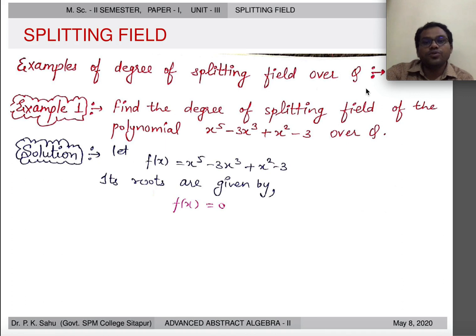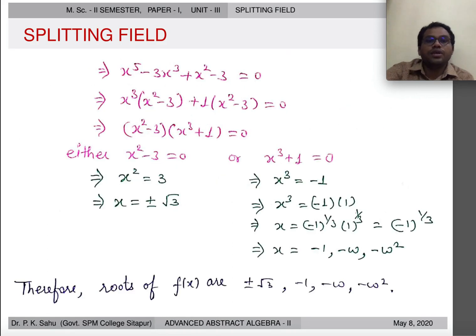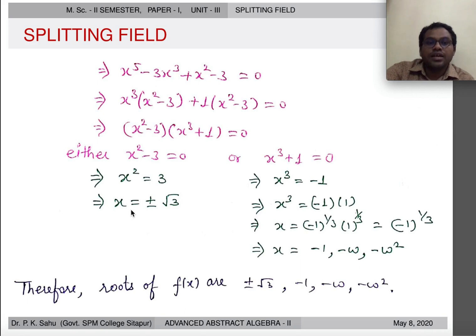Example 1: Find the degree of the splitting field of the polynomial f(x) = x⁵ - 3x³ + x² - 3 over ℚ. Setting f(x) = 0, we factor: x³(x² - 3) + (x² - 3) = (x² - 3)(x³ + 1) = 0. So either x² - 3 = 0 or x³ + 1 = 0. Solving these gives x = ±√3, and x = -1, -ω, -ω², respectively. Thus the roots of f(x) are ±√3, -1, -ω, and -ω².